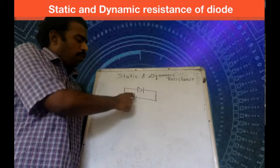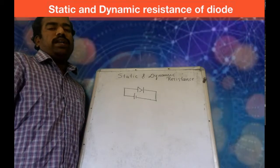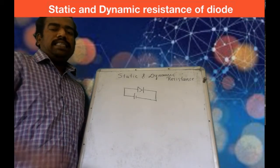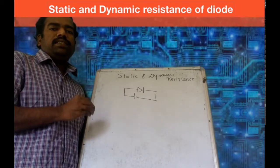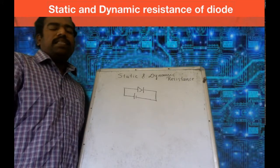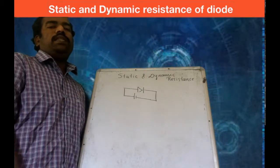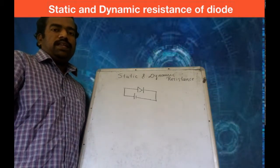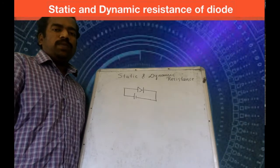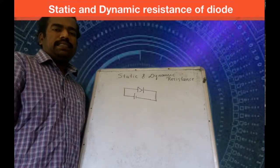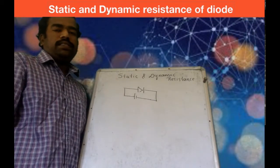When a diode is forward biased, it offers lower resistance to the flow of current. If you have a PN junction diode, we need to expect a depletion region. That depletion region offers junction resistance. When forward biased, the depletion region becomes narrow, so the small width offers a small resistance — we call it forward resistance, and it is very small.